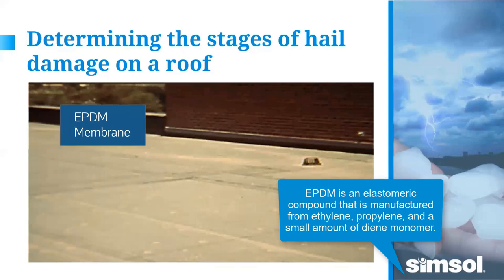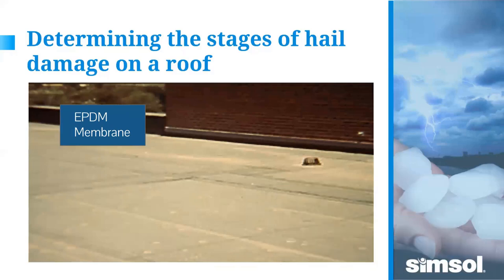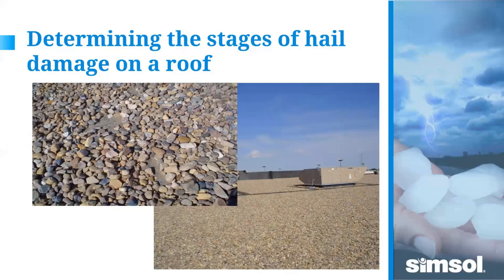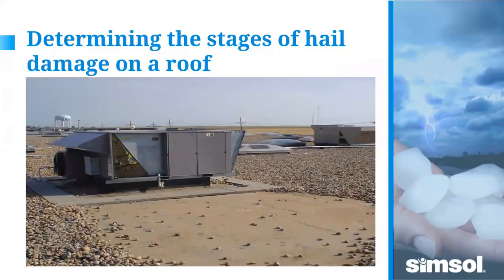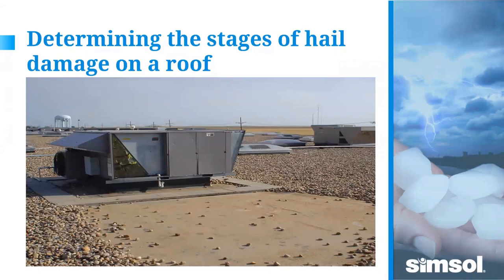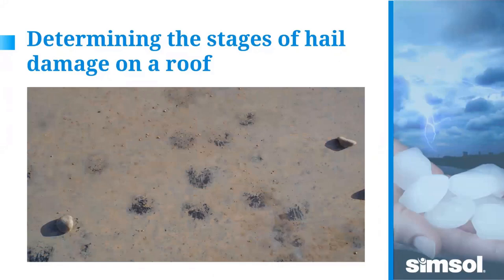On smooth EPDM you can see hail impacts clearly. With gravel-ballasted membranes it's trickier — you need to brush away the ballast to find impacts and count them properly. That takes time and you have to put the ballast back before you leave. Gravel-ballasted roofs take more time to assess properly than just walking around. Again, close-up photos without a scale reference give no indication of whether hits are quarter-inch or foot-wide.